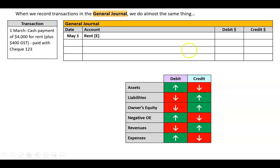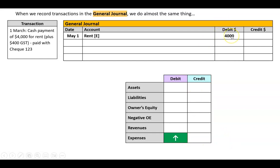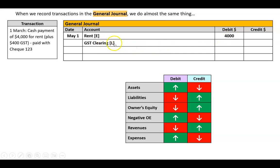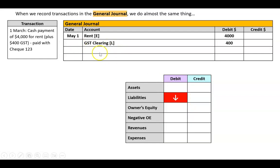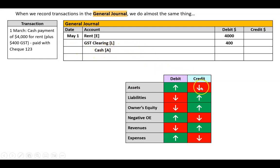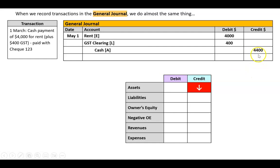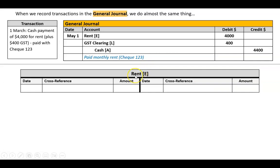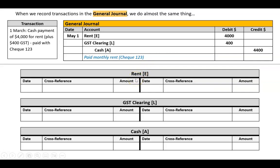In the general journal, we take the date, then write the account name. There's no 'up or down' or classification column, so I optionally write in brackets what type of account it is — e.g. (E) for expense — but you don't need to do that. Rent is an expense going up, so it's a debit. GST clearing is a liability going down, so also a debit. Cash is an asset being paid out, so that's a credit. We also add a narration — a description of the transaction, the source document, and then post to the ledger accounts.